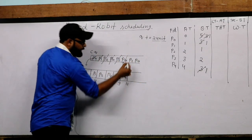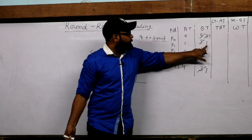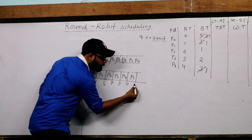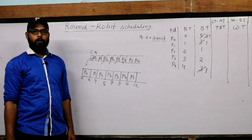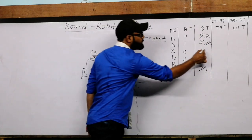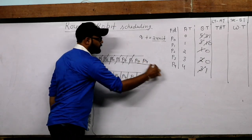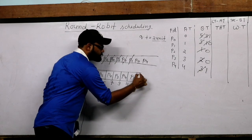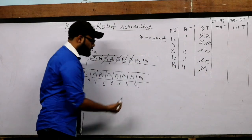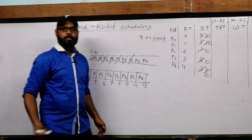After P4, P1 executes again. P1's remaining time is 1, so P1 executes only 1 unit — from 11 to 12 — and P1 finally finishes its execution, remaining time becomes 0. P2 and P3 also have remaining time 0. The Gantt chart so far shows: P0(0-2), P1(2-4), P2(4-5), P0(5-7), P3(7-9), P4(9-11), P1(11-12).